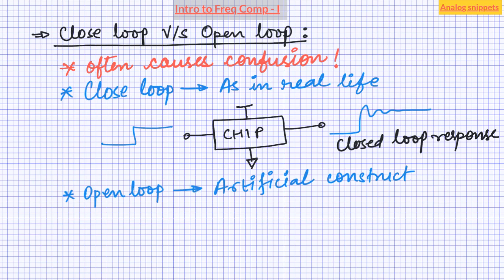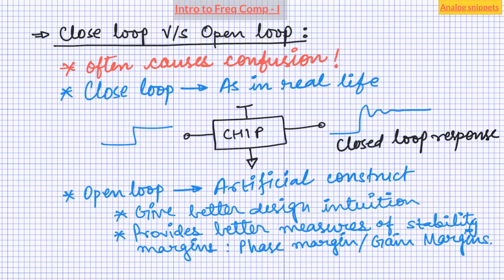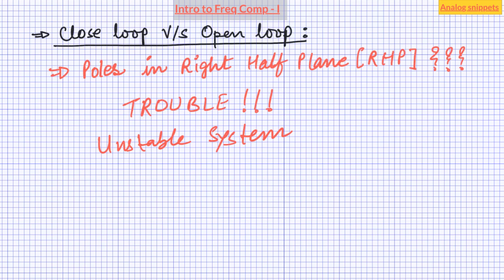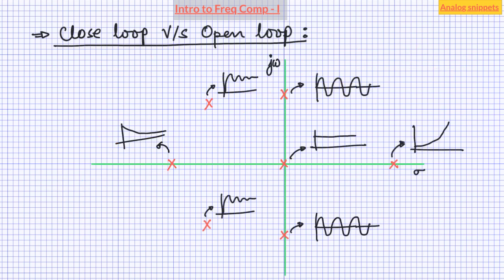Using the open loop response has certain advantages over using closed loop response. It gives more intuition about the cause of instability and hence the chance to fix it. At the same time, open loop analysis gives a better measure of degree of stability in terms of phase margin and gain margin. But it doesn't mean that closed loop analysis is not used at all. You may already know that poles in the right half S-plane mean an unstable system — here we are referring to the closed loop poles. Poles in open loop transfer functions are almost never found in the right half plane.